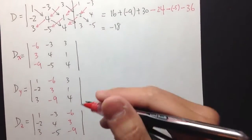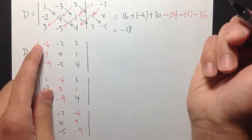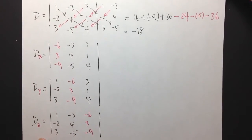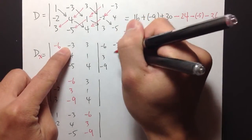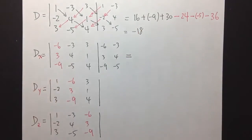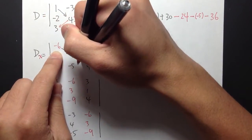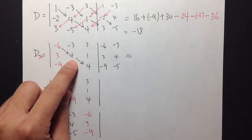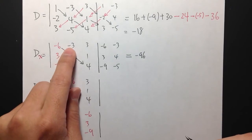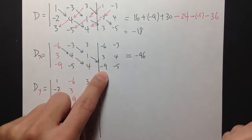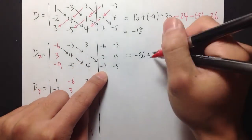Now let's do the same for Dx. Using the same diagonal procedure, first I copy down the first two columns. The first left-to-right diagonal: negative 6 times 4 times 4 is negative 96. The next diagonal: negative 3 times 1 times negative 9 is positive 27. Then I add the product of 3 times 3 times negative 5, which is negative 45.